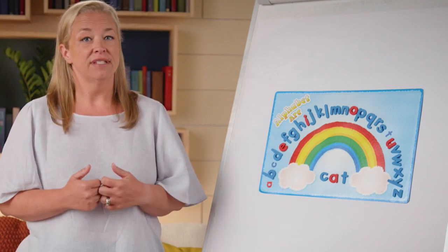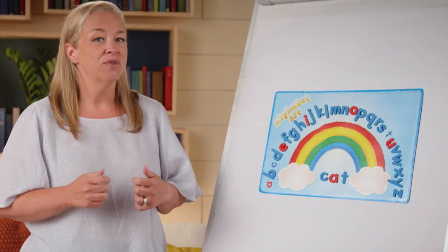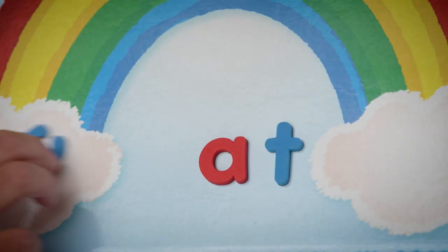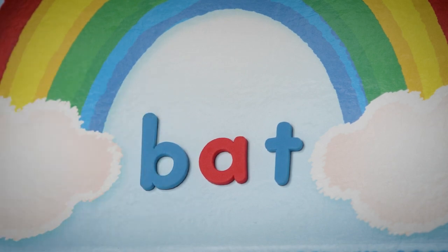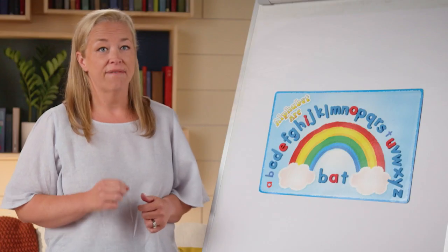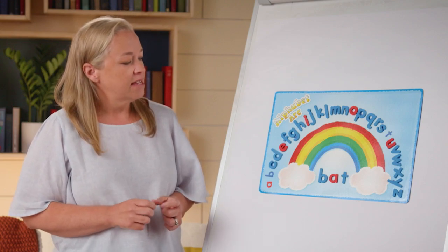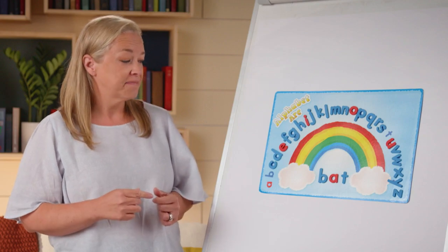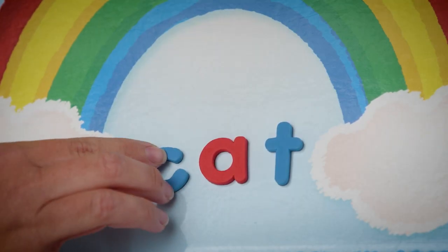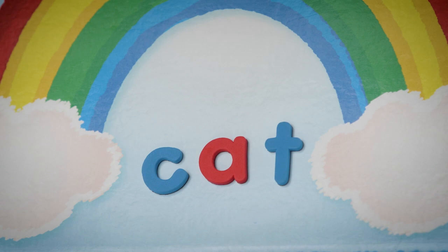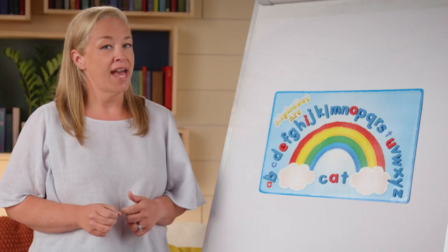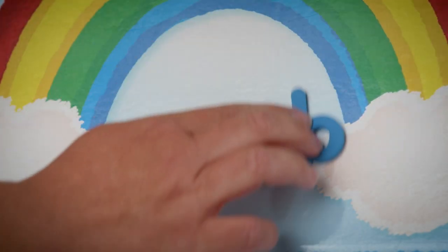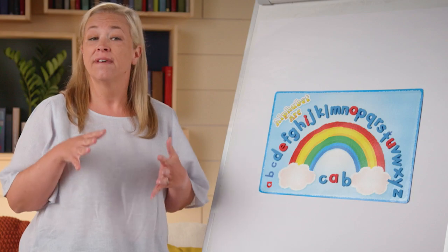Let's take our word 'cat' and change it to the word 'bat.' This time I changed the onset sound — now I have 'bat.' Let's change the word 'bat' right back to the word 'cat.' This time I'm going to be changing that onset again.